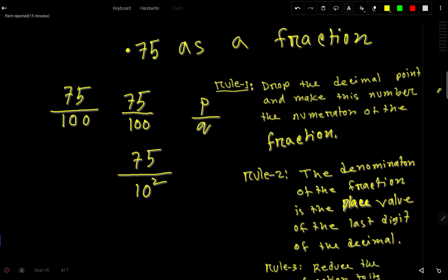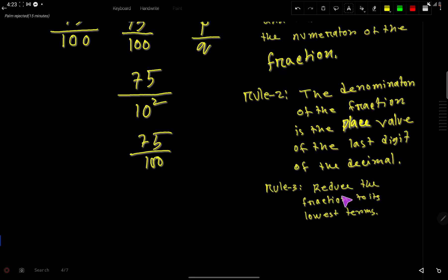This means 75 by 100. Now at last, you have to reduce the fraction to its lowest terms. We'll split these two numbers.